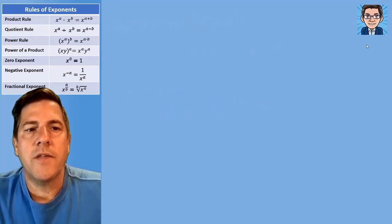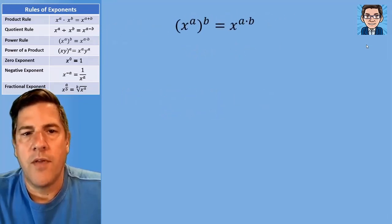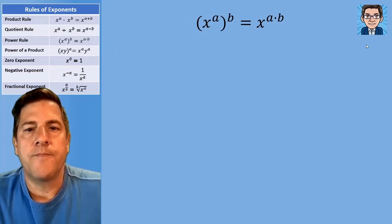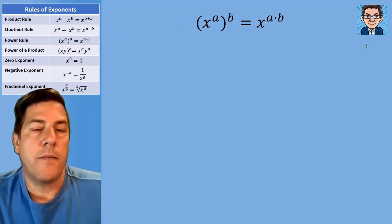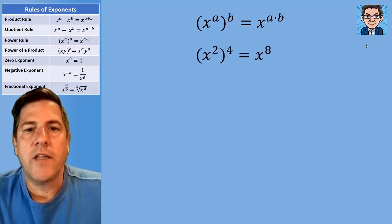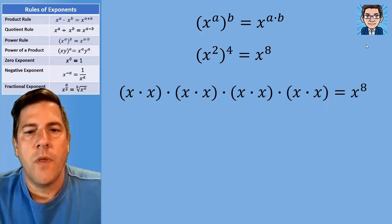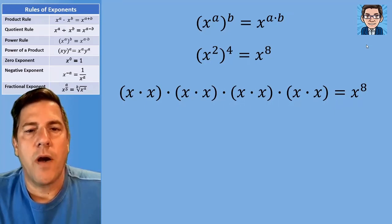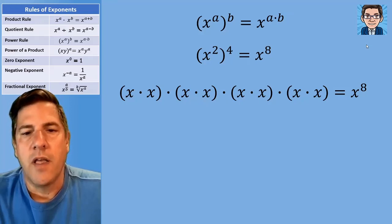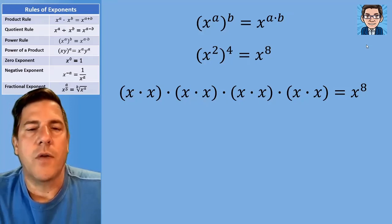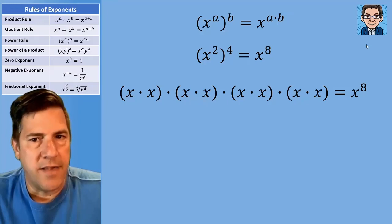When we raise to a power, we're going to end up multiplying. So x squared to the fourth is going to be two times four, or x to the eighth. Visually, we've got x squared and we're multiplying it together four times, so we have to do two times four to get the total of eight.